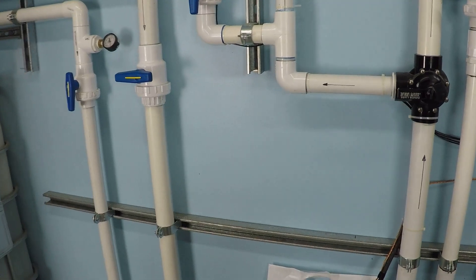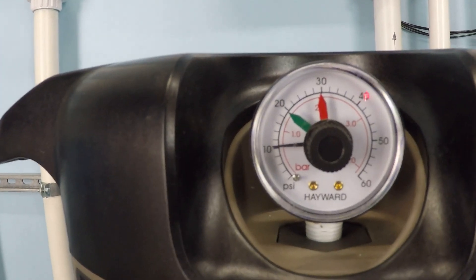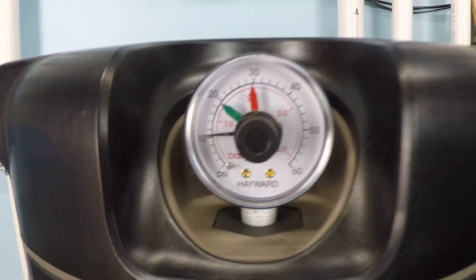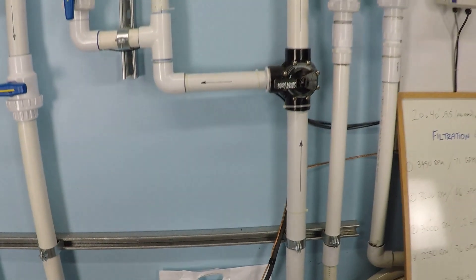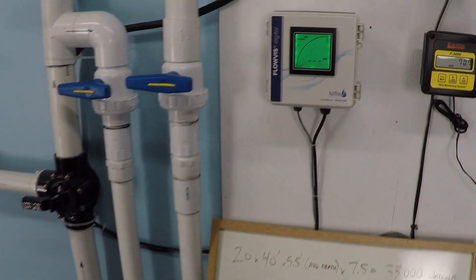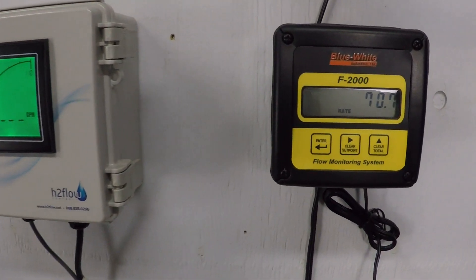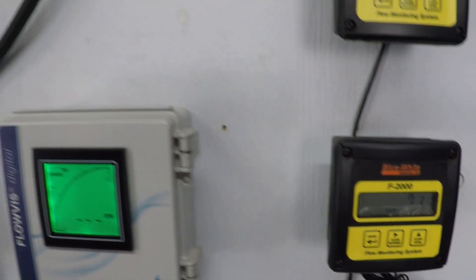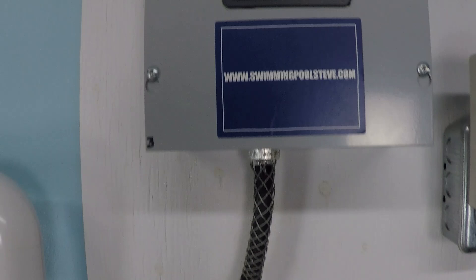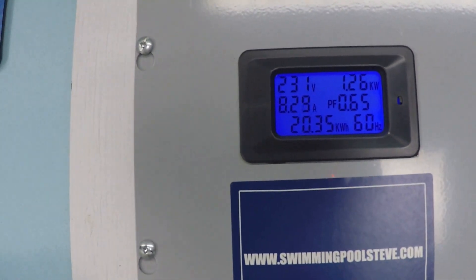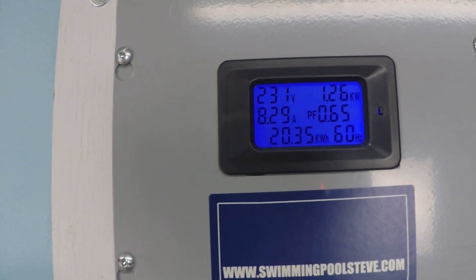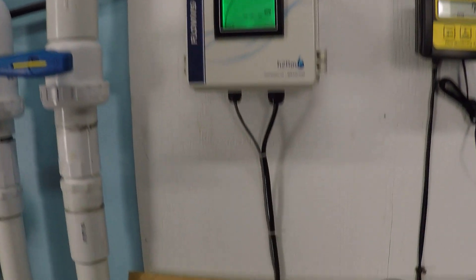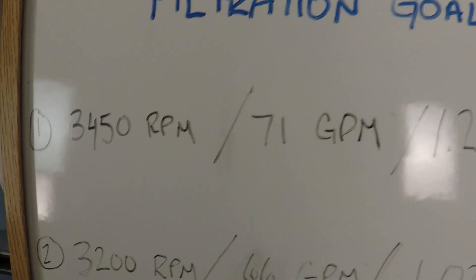3450 RPM. Just over 10 PSI. 71 gallons per minute. Top right corner, 1.26 kilowatts, so 1,260 watts. And that's what we were expecting to see here.